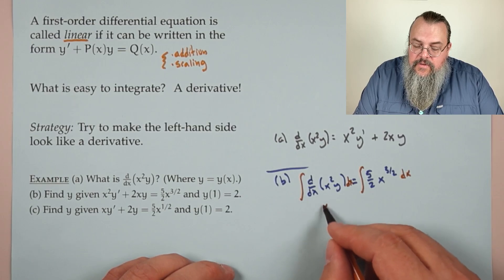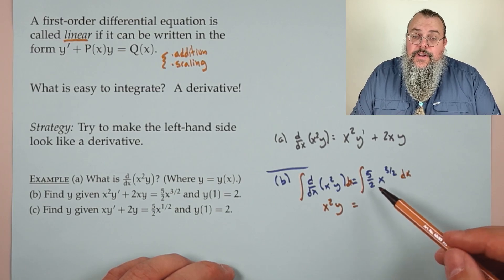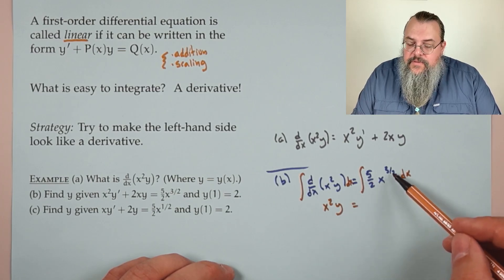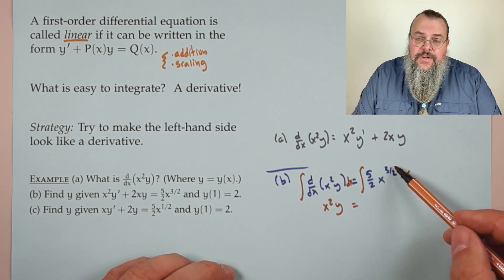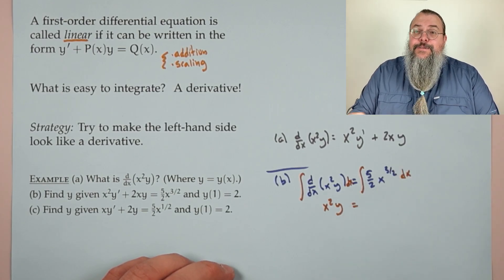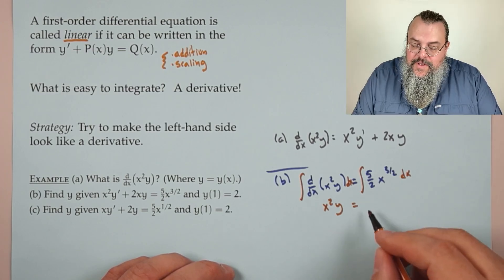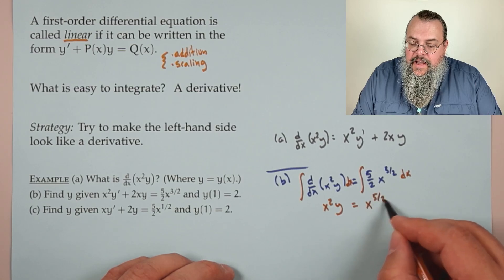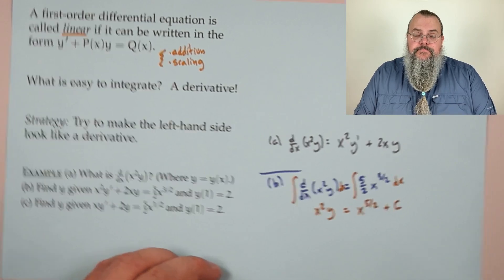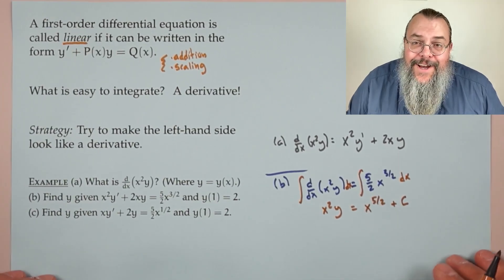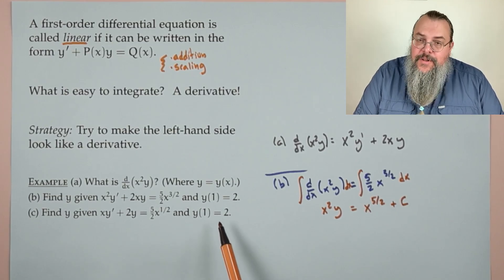We integrate both sides. On the left we get x²y. On the right, 5/2 · x^(3/2): add 1 to the exponent to get x^(5/2), then divide by 5/2, which is the same as multiplying by 2/5, giving x^(5/2). Plus c.